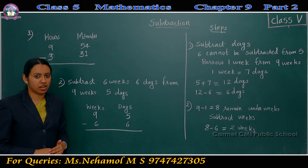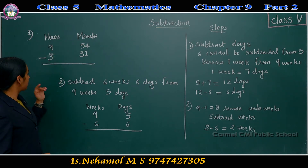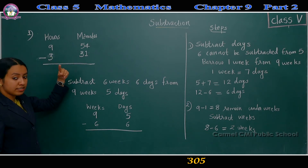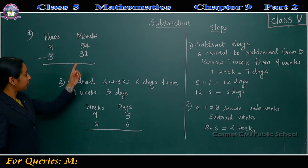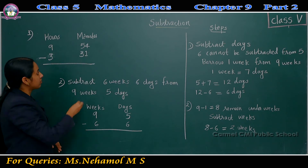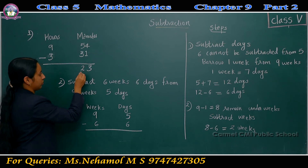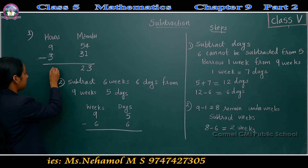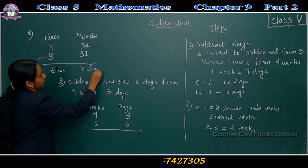Next topic: subtraction. We can go through some examples. First question: subtract 3 hours, 31 minutes from 9 hours, 54 minutes. First, subtract minutes: 4 minus 1 is 3, 5 minus 3 is 2 — giving 23 minutes. Then 9 minus 3 is 6 hours. Answer is 6 hours, 23 minutes.